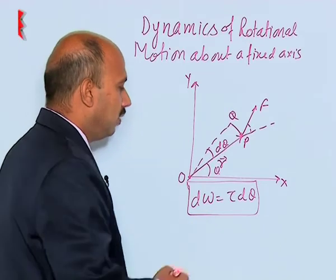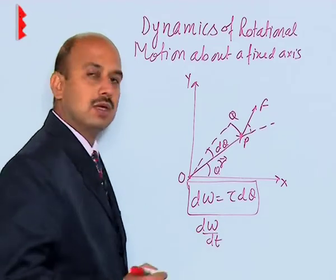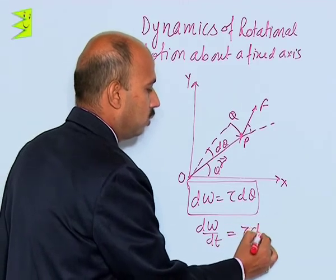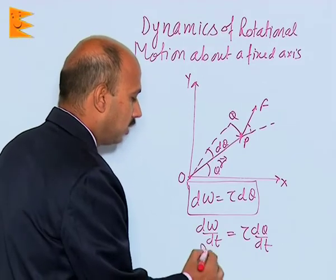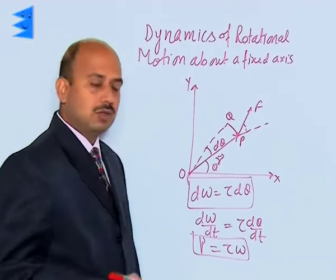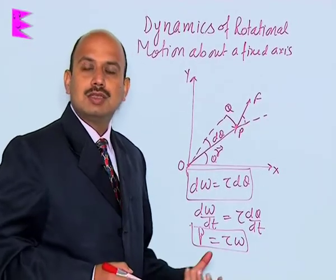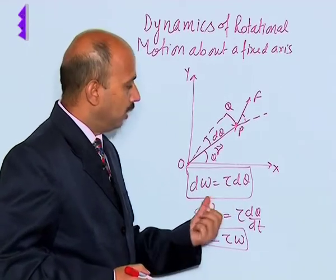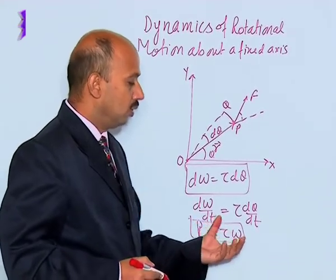If you know the work done, then we can write dW by dt. We are differentiating with time: dW upon dt is equal to torque into d theta upon dt. So we can write this as power. Power is equal to torque into omega. So when the body is rotated by a small angle d theta, the work done by the torque is equal to tau into d theta, and the power associated with this is P is equal to tau into omega.